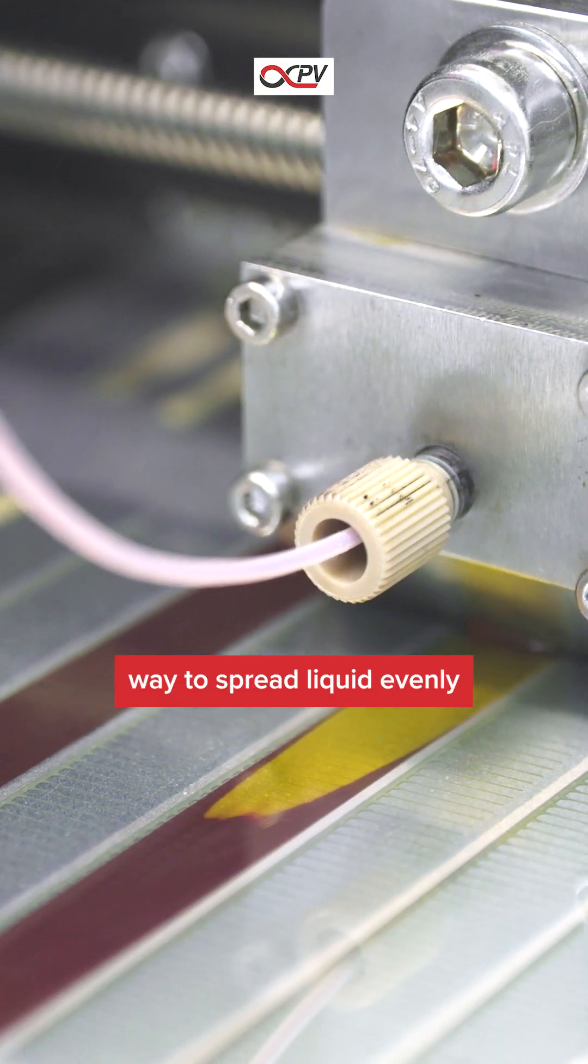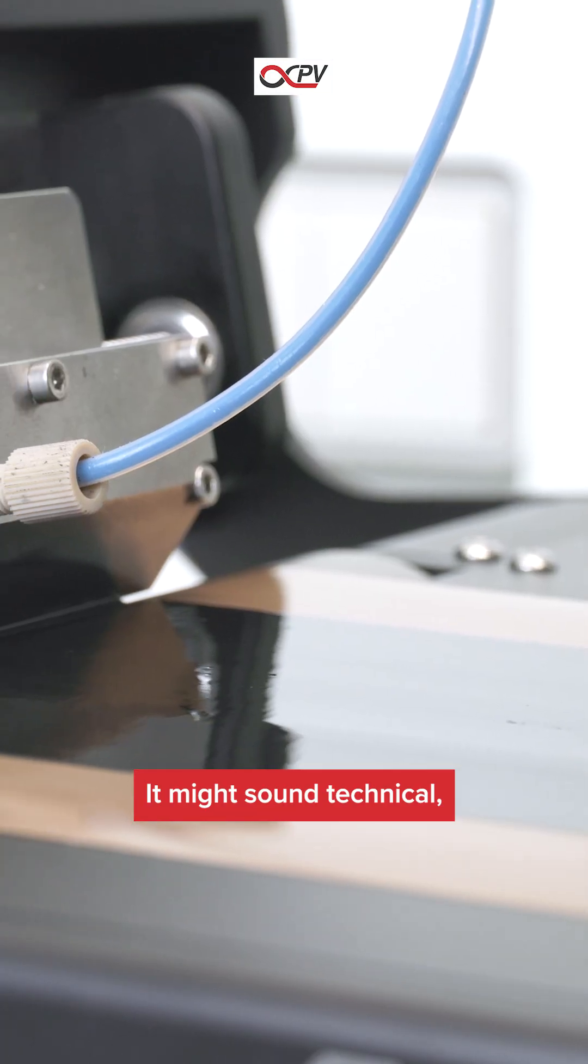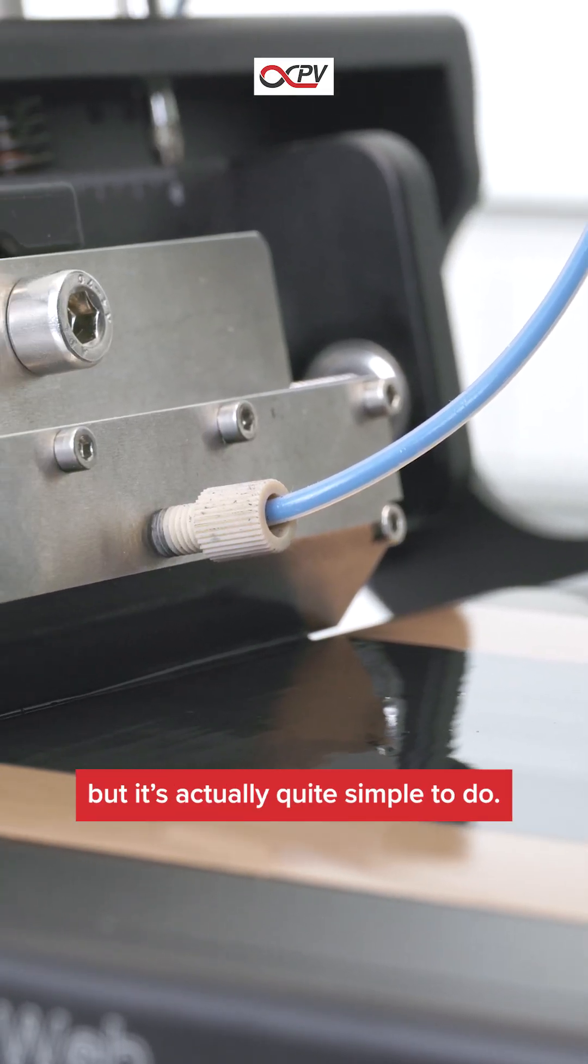Slot die coating is a way to spread liquid evenly onto a flat surface with very high precision. It might sound technical, but it's actually quite simple to do.